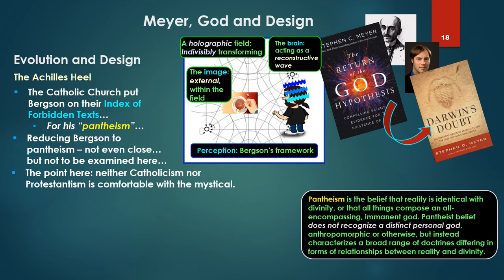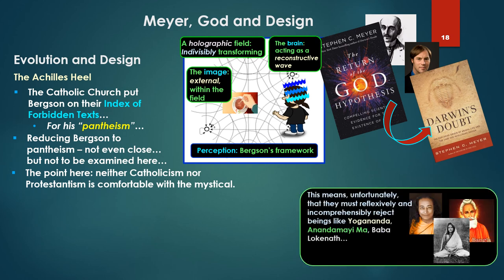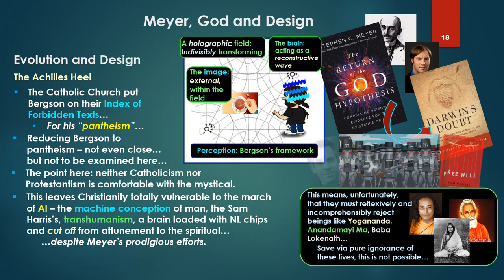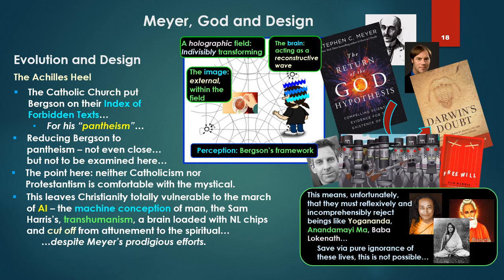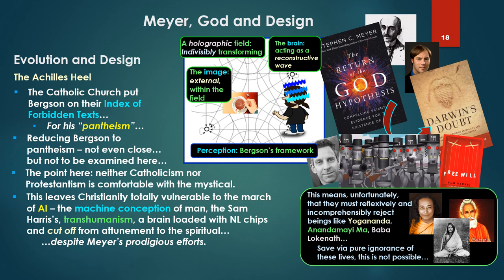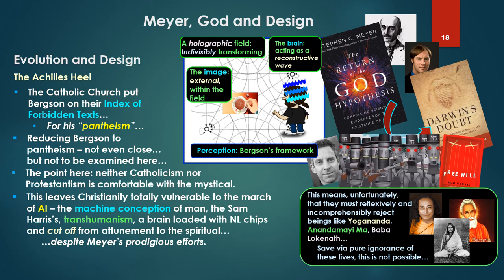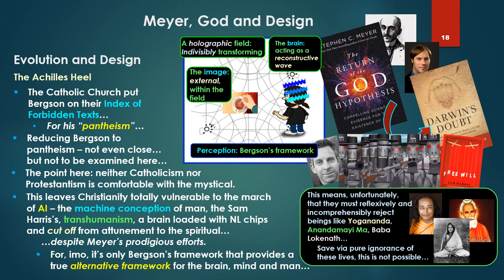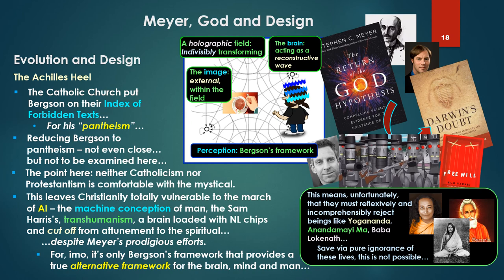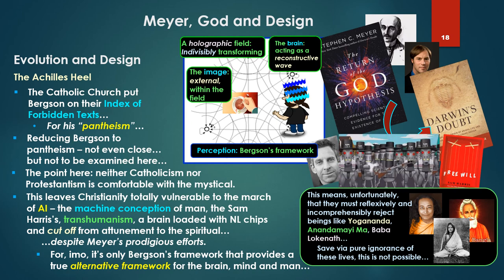Pantheism definition from Wiki: the belief that reality is identical with divinity, or that all things compose an all-encompassing immanent God. Pantheist belief does not recognize a distinct personal God, anthropomorphic or otherwise, but instead characterizes a broad range of doctrines differing in forms of relationships between reality and divinity. For reducing Bergson to pantheism, not even close, but not to be examined here. Just—no, yes, he does not discuss a personal God. This does not mean his philosophy is incompatible or ultimately implies such. He was carrying the argument on a scientific and metaphysical space-and-time level where it has to be won, and where Meyer is actually trying to win. His implied theology is another and very big subject. The point here: neither Catholicism nor Protestantism is comfortable with the mystical. This has been a long history of persecution of the mystics on both sides. This means, unfortunately, that both groups must reflexively and incomprehensibly reject beings like Yogananda, Anandamayi Ma, Babaji, Lahiri Mahasaya, etc. And save your pure ignorance of these lives, it's not actually possible to reject the spiritual nature of these beings. So this leaves Christianity totally vulnerable to the march of AI, in my opinion—that is, to the machine conception of man, to the Sam Harrises, everything's just neurons, transhumanism, a brain loaded with Neuralink chips, cut off from attunement to the spiritual. And this despite Meyer's prodigious efforts, for in my opinion, it's only Bergson's framework that provides a concrete alternative framework to the brain-mind and man.